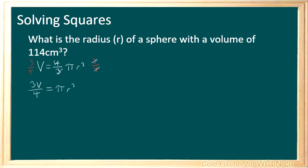From here we will divide both sides by pi. So we get 3v over 4pi is equal to, pi cancels and we are left with r cubed.